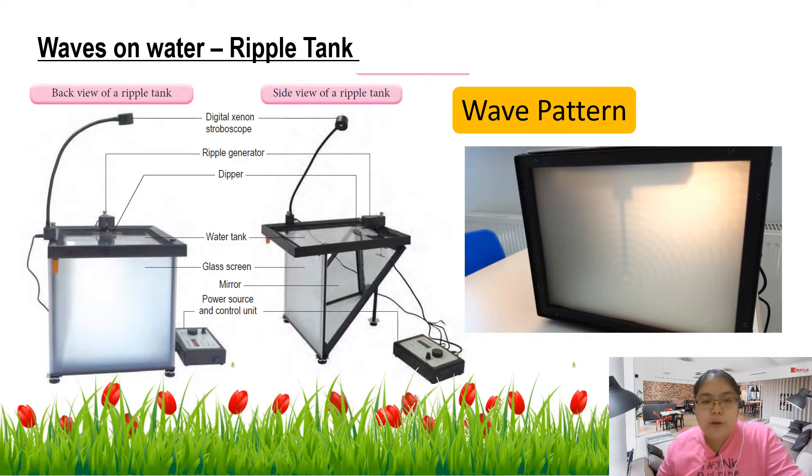It depends on your dipper. If your dipper is a plane, it produces a straight line. If your dipper is a spherical, then it produces a circle shape.